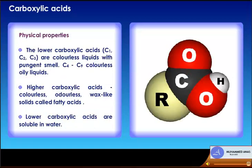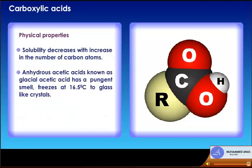Physical properties of carboxylic acids: lower carboxylic acids (C1, C2, C3) are colourless liquids with a pungent smell; C4 to C9 are colourless oily liquids; higher carboxylic acids are colourless, odourless, wax-like solids called fatty acids. Lower carboxylic acids are soluble in water; solubility decreases with increasing carbon atoms. Anhydrous acetic acid, known as glacial acetic acid, has a pungent smell and freezes at 16.5°C to glass-like crystals.